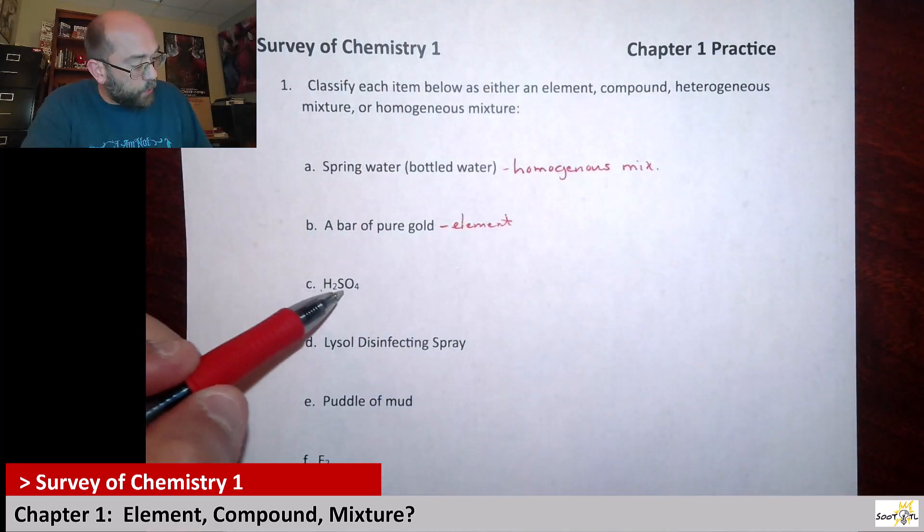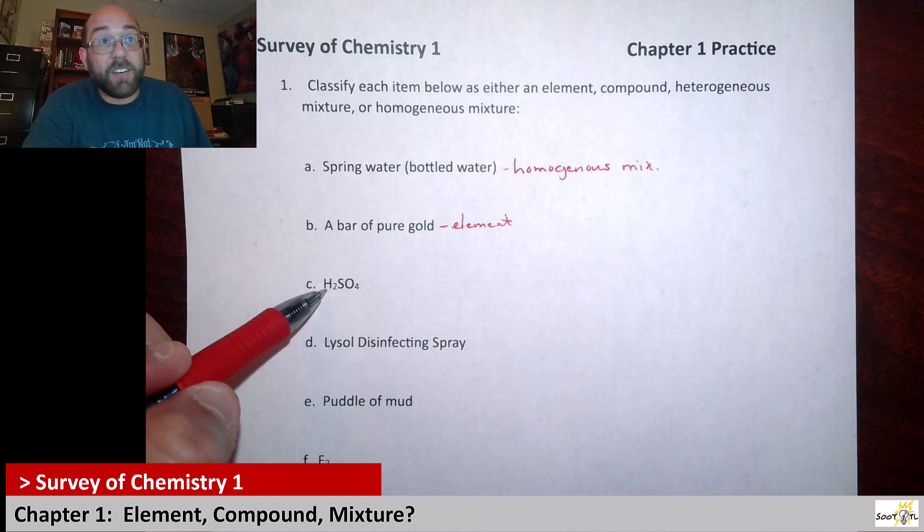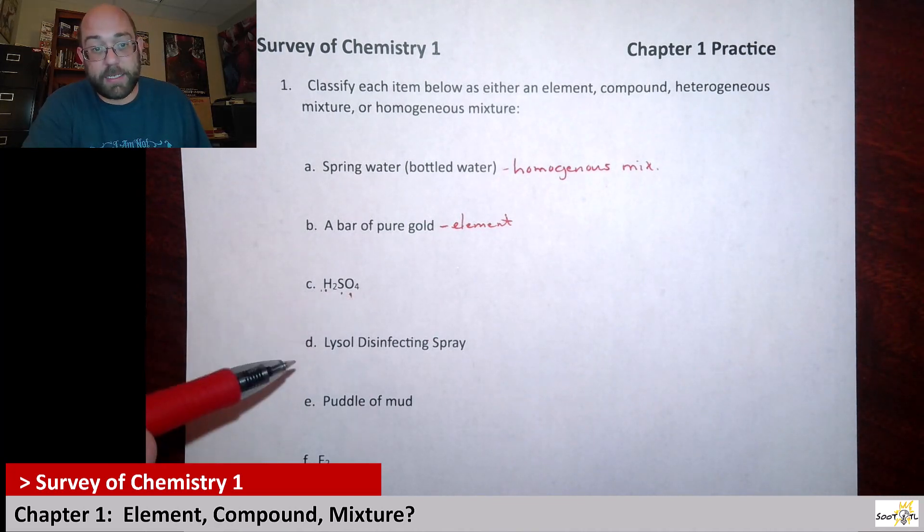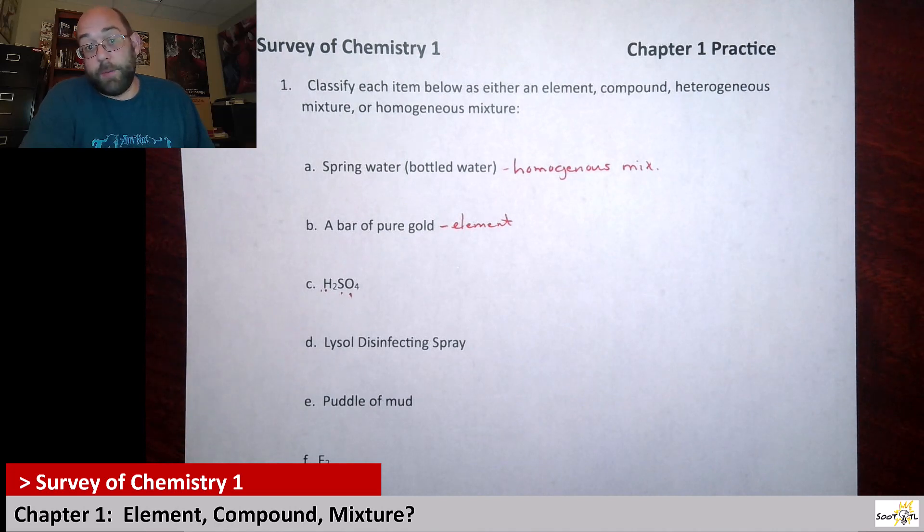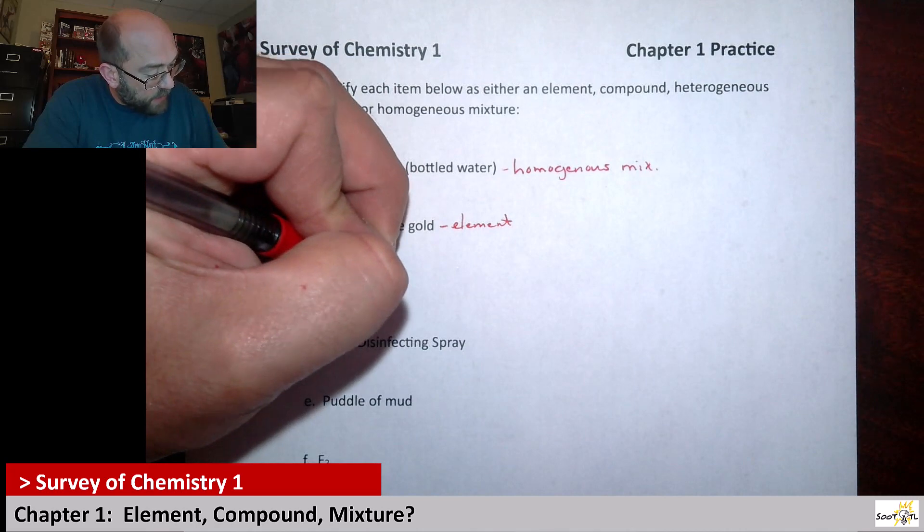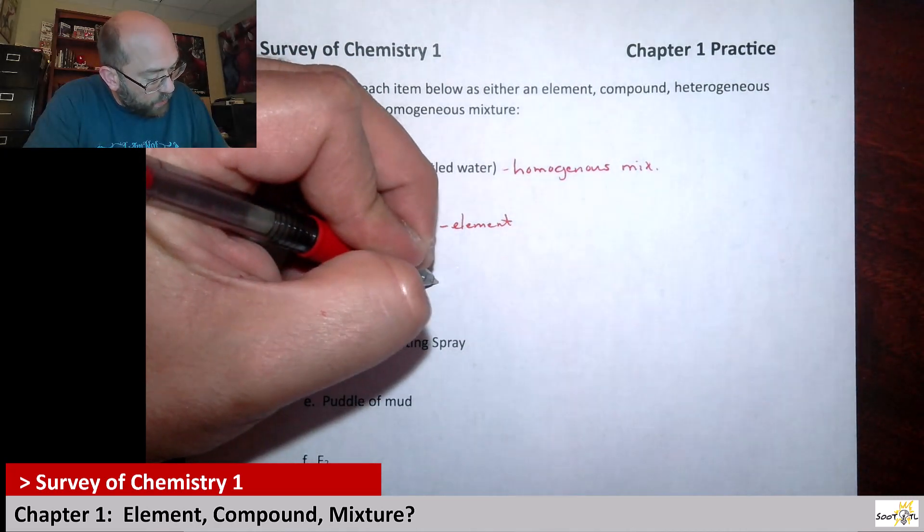Here we see H2SO4. So we see the element hydrogen, the element sulfur, and the element oxygen present. It's pretty much just giving us this formula. Based off that, this has three separate elements in it. So we wouldn't classify this as an element. The most likely scenario is that we would classify this as a compound.